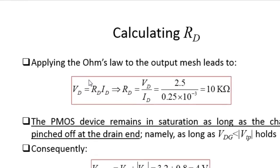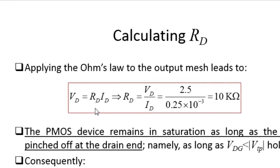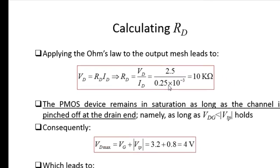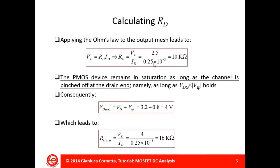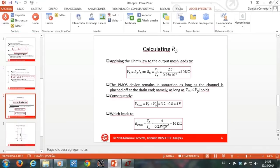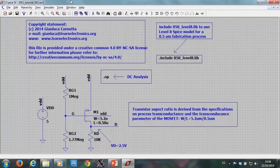Applying Ohm's law to the output mesh allows me to compute resistance RD, and this leads to RD equal to 10K ohms. Now I have all the data to set up my schematic for simulation. If I switch to my schematic...